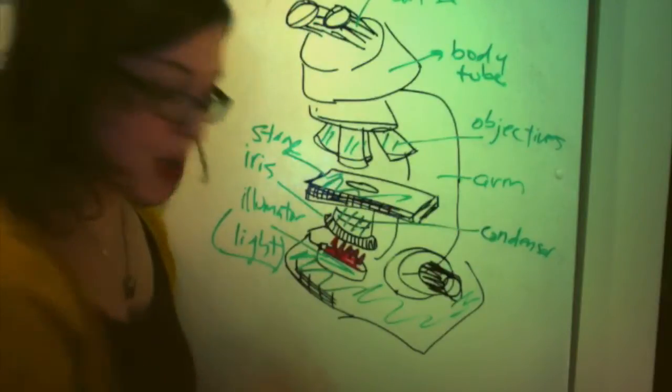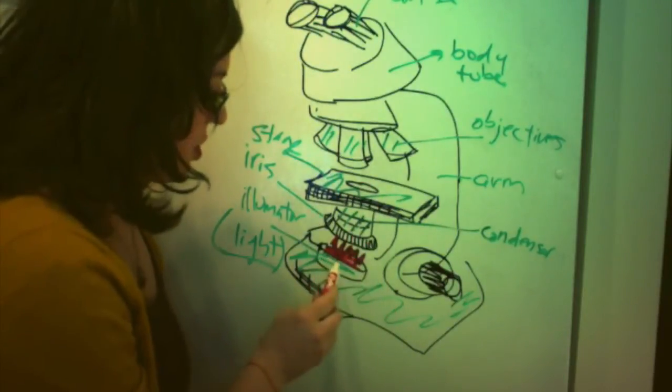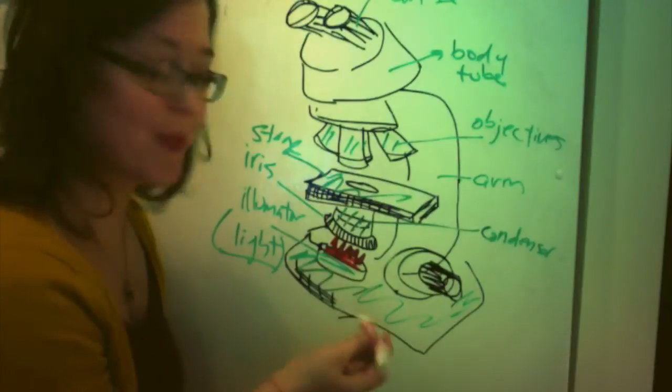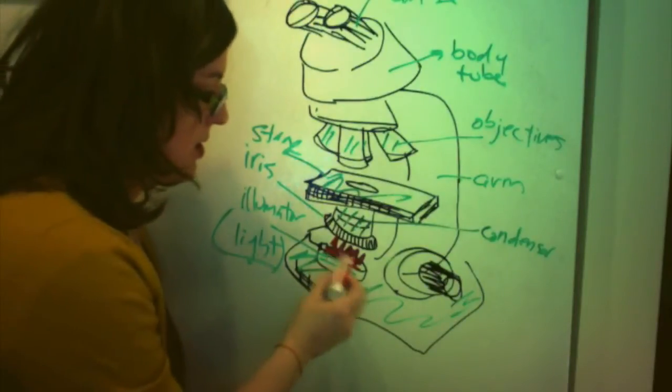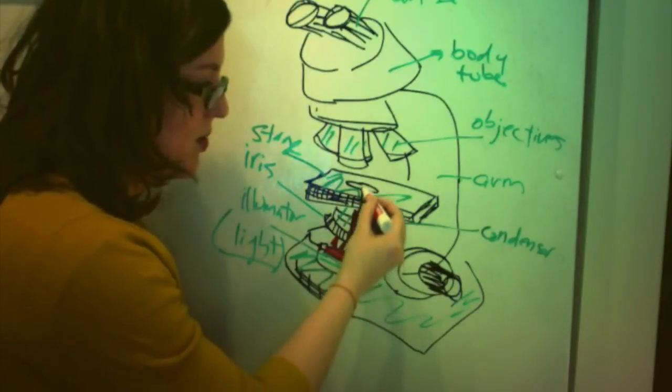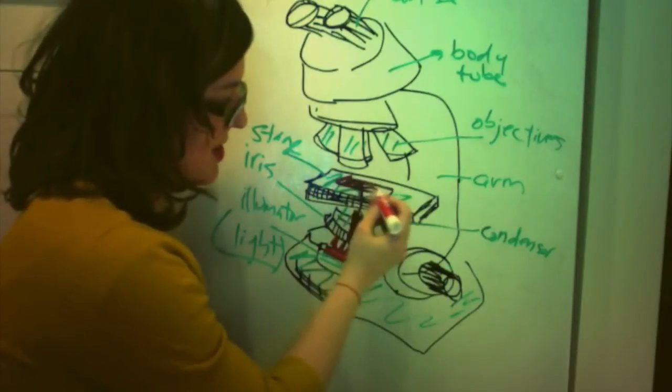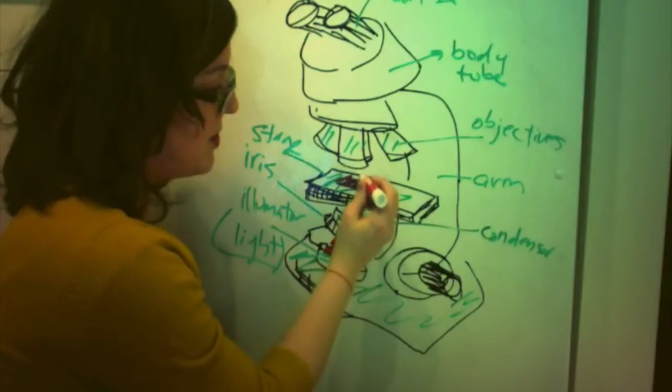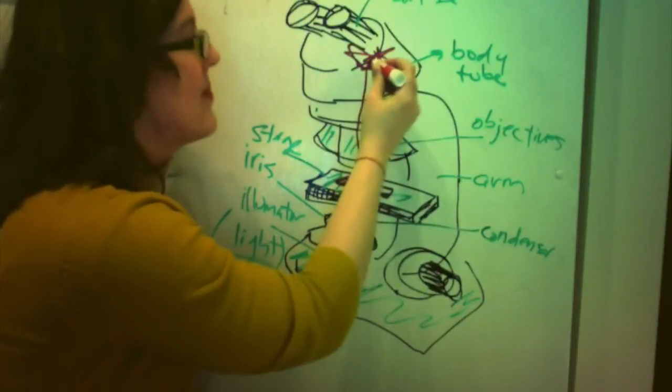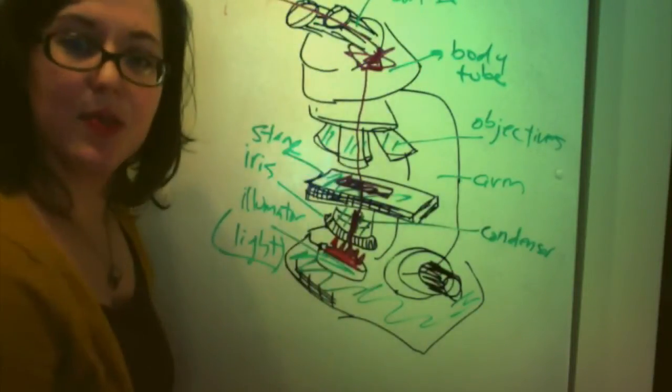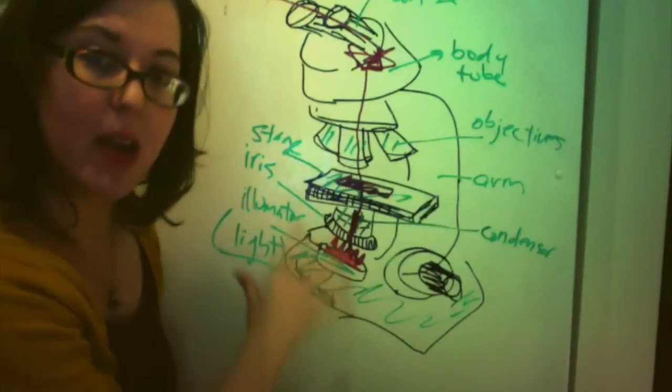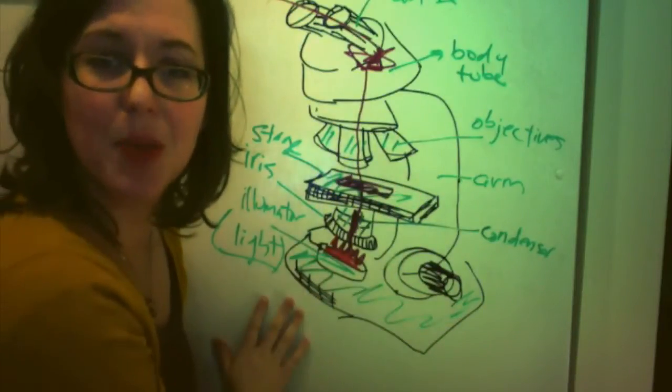Okay, so those are the components that you need to know. Let's follow the light source. So, you should be able to say this along with me at this point, and I would encourage you to do so while you're watching. So, the light goes through the illuminator, through the iris, through the condenser, through the stage, onto what is the slide, up to the objective, through the body tube, through a series of prisms and mirrors and craziness, then through the ocular lens. So, you should be able to explain that for me in a future quiz. You should be able to do that with no problem.